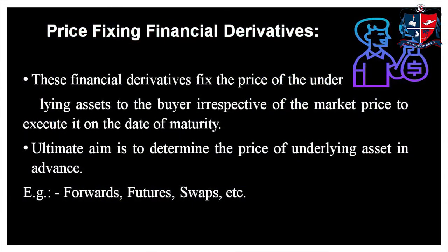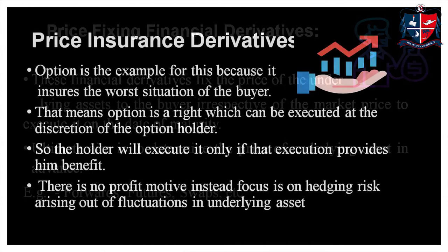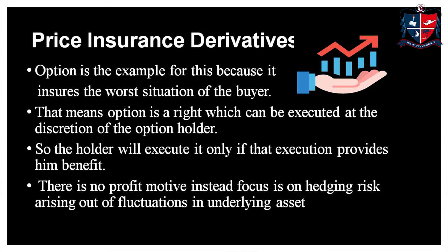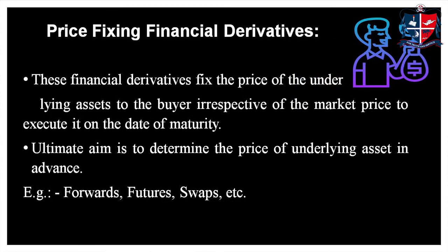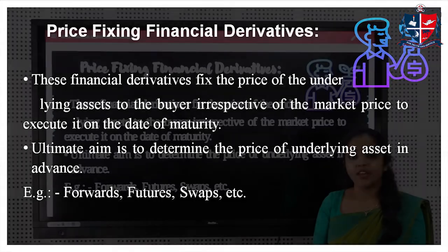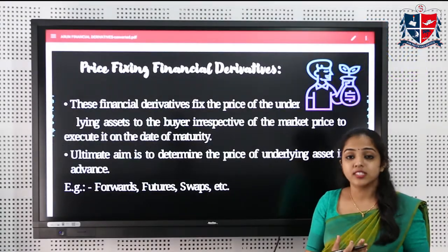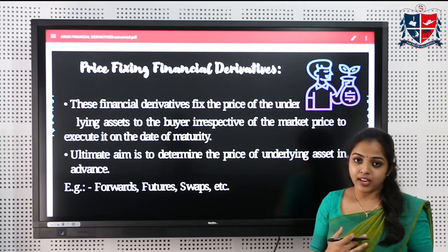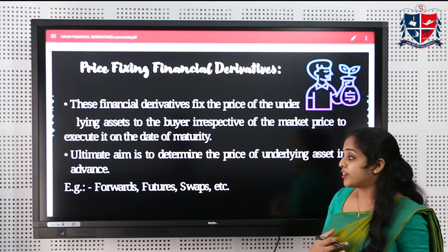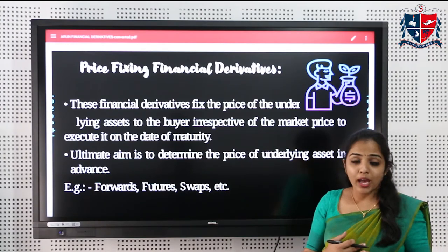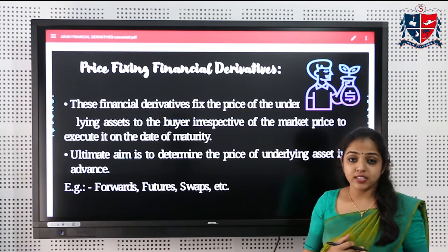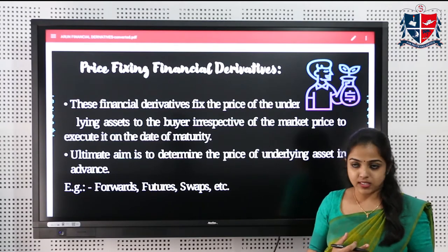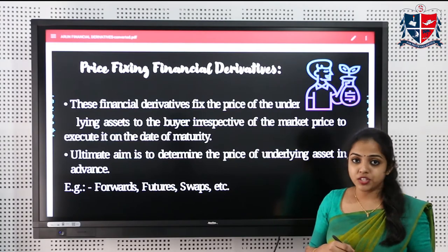Let's classify derivatives. The first classification is price-fixing derivatives, which are used to fix the price of an underlying asset at a predetermined level before a future date. Examples include futures, forwards, and swaps, where we fix the price in advance irrespective of market conditions.